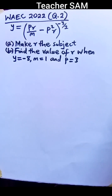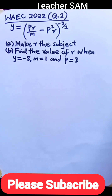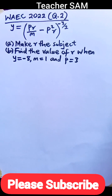Question 2. Y is equal to PR divided by M minus P squared times R, all raised to negative 3 over 2. Part A: Make R the subject. Part B: Find the value of R when Y is equal to minus 8, M is equal to 1, and P is equal to 3.